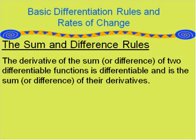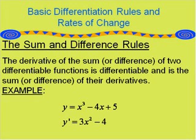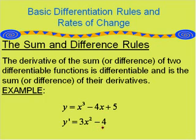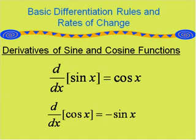Next, we have the sum and difference rules. The derivative of the sum or difference of two differentiable functions is differentiable and is the sum or difference of their derivatives. For example, with several terms being added and subtracted, we apply the power rule to each term individually along with the constant rule on the last term. The derivative of x cubed is 3x squared, the derivative of negative 4x is negative 4, and the derivative of 5 is 0.